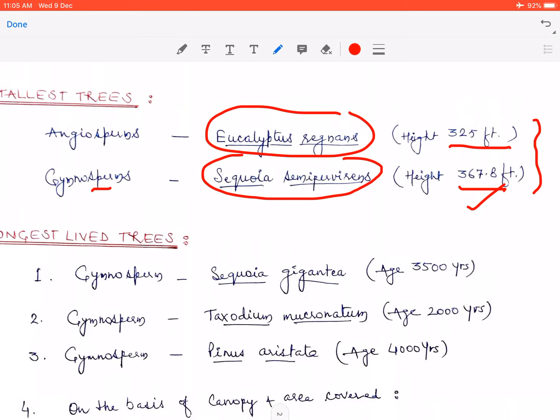Iske baad hum baat karenge longest lived trees ki. Aur ye jo longest lived trees mein jo sabse pehle jo naam aata hai woh hai ek gymnosperm ka jiska naam hai Sequoia gigantea. Iski age karib 3000 to 3500 years ke karib mani gayi hai. Aur ye jo tree hai ye California ke Sequoia National Garden mein ugha hua hai, aur iski height karib 272 feet hai, aur iska circumference is around 101.6 feet ka hai.